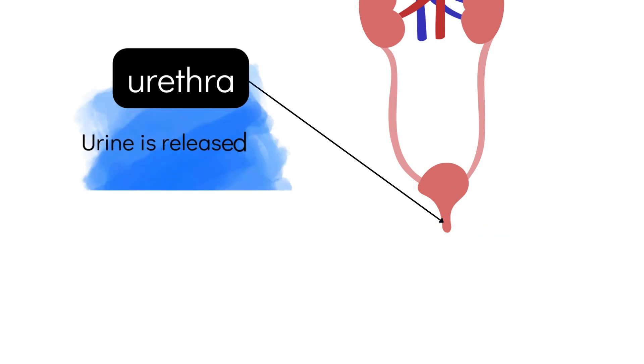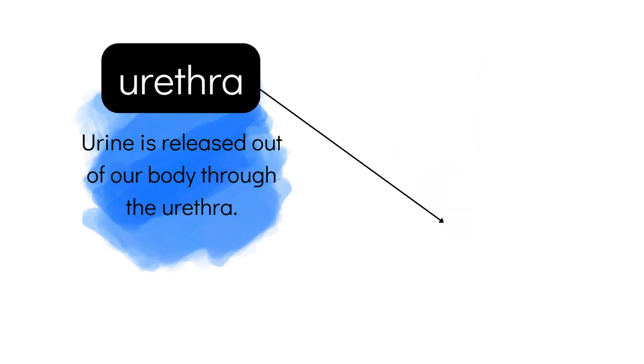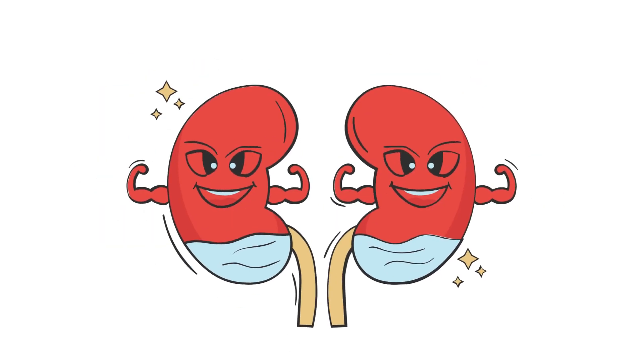Urine is released out of our body through the urethra. To keep your excretory system healthy, drink at least 6-8 glasses of water every day.